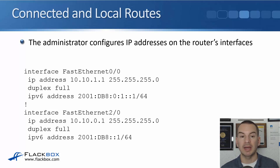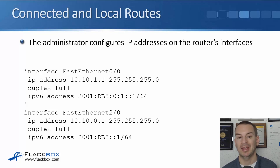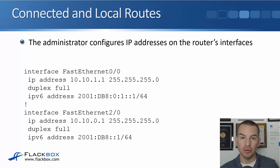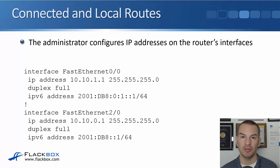On interface FastEthernet 0/0, we've configured an IPv4 address — 10.10.1.1 — and we've also configured an IPv6 address on that interface: 2001:DB8:0:1::1/64. We've also configured both an IPv4 and an IPv6 address on FastEthernet 2/0. As usual, when configuring IPv4 the command starts with 'ip', like 'ip address'. When configuring IPv6, it starts with 'ipv6', like 'ipv6 address'.